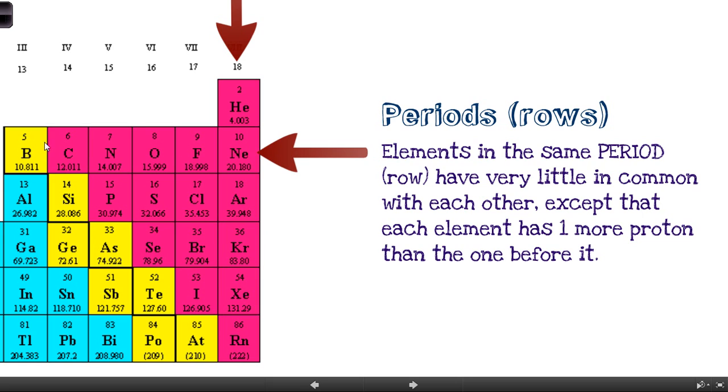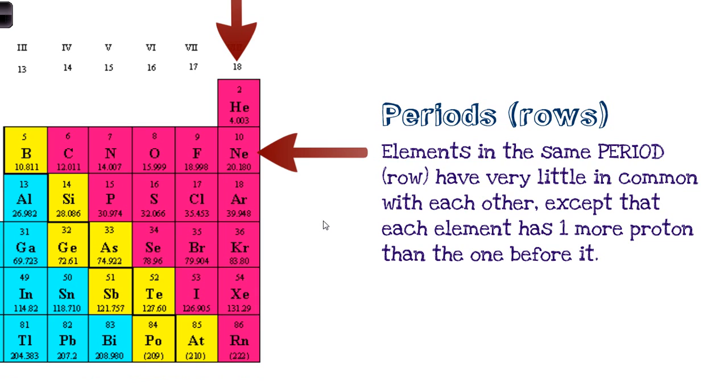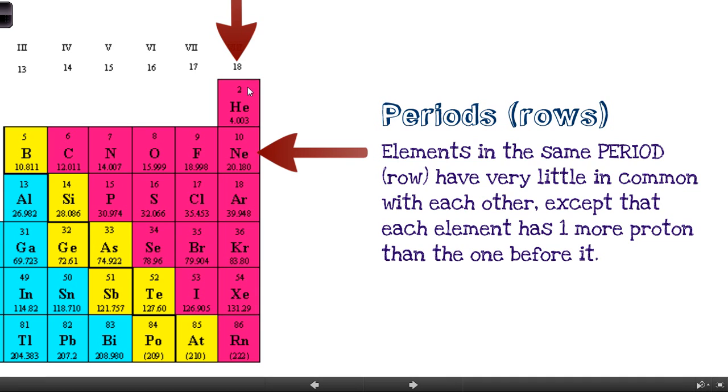So boron, and then carbon and nitrogen. So carbon is one more proton than boron. Nitrogen is one more proton. Oxygen is one more. Fluorine has one even more. Okay, so guys, as we read across, they're just getting slightly bigger. They've got one more proton than the element before it. The key thing there, guys, is all you really need to know is that the columns up and down are groups and the rows left to right, we call those periods.